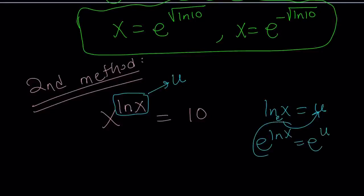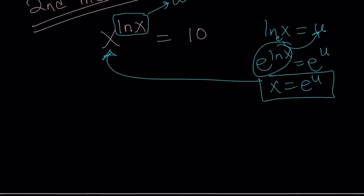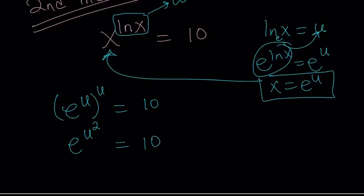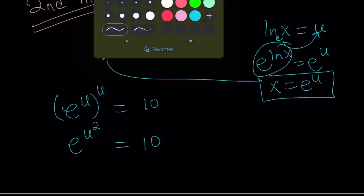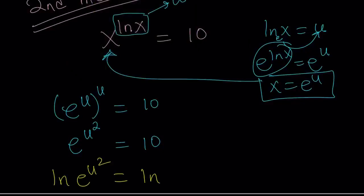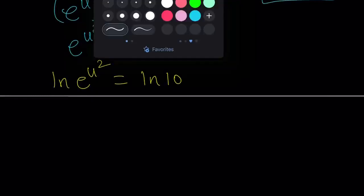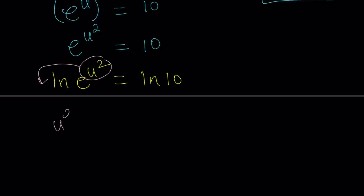We substitute x equals e to the power u into the equation. So e to the u raised to the power u equals 10, which gives us e to the power u squared equals 10. Now we ln both sides to bring down the power, and that gives us u squared times ln e equals ln 10. Since ln e equals 1, we get u squared equals ln 10.